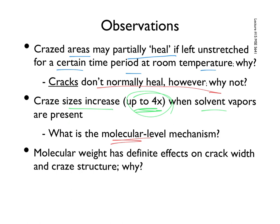This is a common thing in a lot of materials — you put materials under strain, they behave differently. Then of course molecular weight has definite effects on crack width and craze structure. You saw those previous examples of TEMs and SEMs showing how molecular weight affects the width and the extension. What is that? Why is it so important? What's going on if we increase molecular weight from 100,000 to 1.8 million?